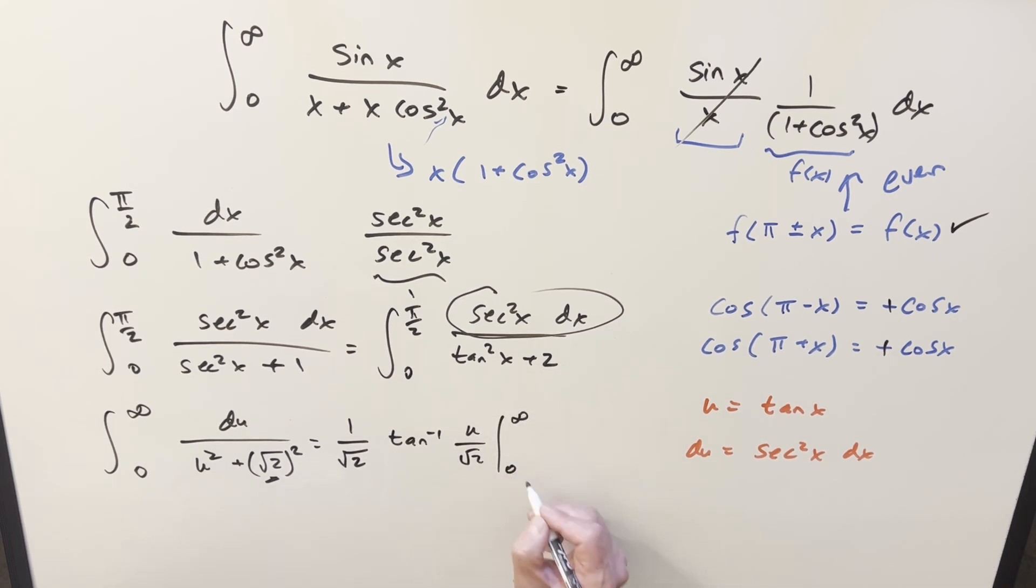Just evaluate from zero to infinity. Arc tan at zero is just zero. Plug in infinity, arc tan at infinity is pi over two. So for my final solution on this, we just get pi over two square root of two.